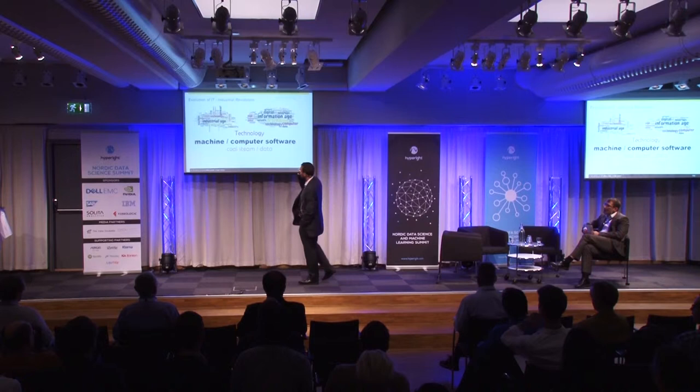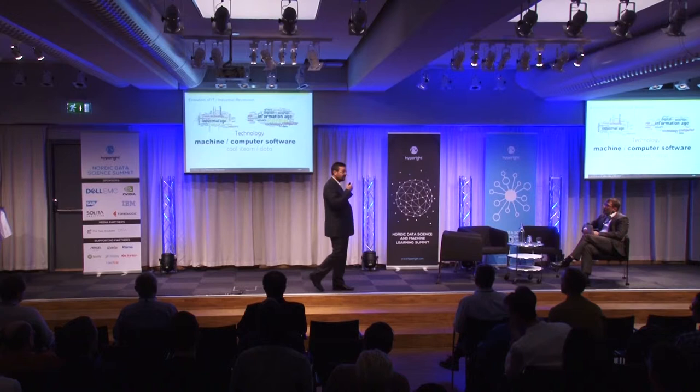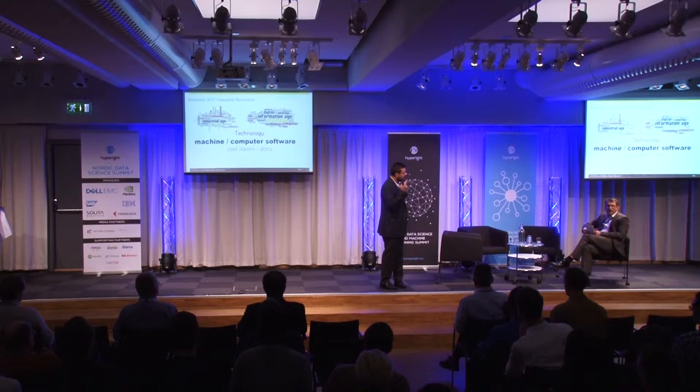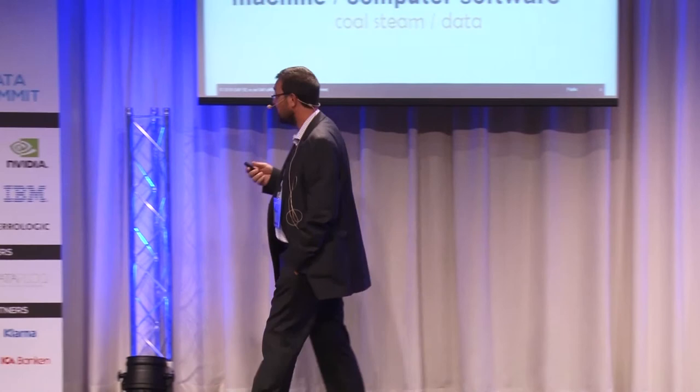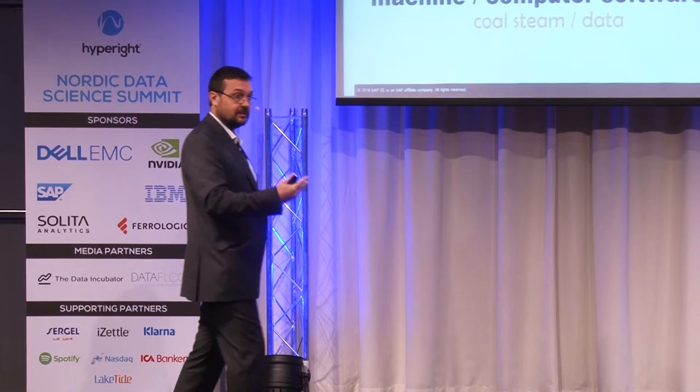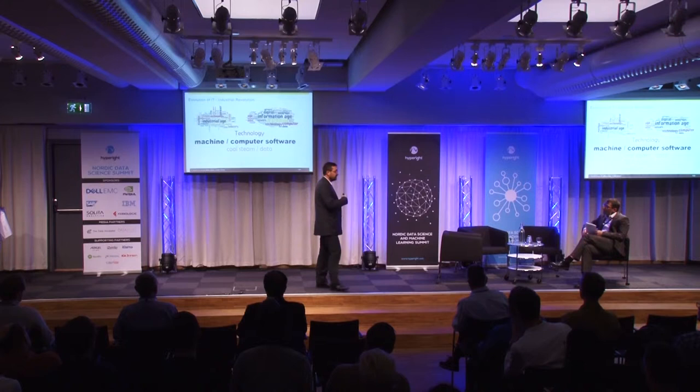I took this analogy as well: what is common between the industrial revolution and the evolution of IT? Well, technology first — without technology, you don't do anything, you don't evolve. Second, you need some raw material to work on; it is data now, it was coal and stuff like that before. And you build something that uses the raw material to provide new things — that was machines at the time, and today it's computer software.